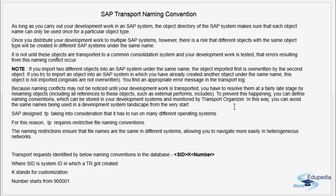That is why SAP has come up with a naming convention, taken care of by the transport organizer. To prevent this from happening, you can define naming conventions stored in your development systems and monitored by the transport organizer. This way you avoid the same names being used across the development system landscape from the very start.